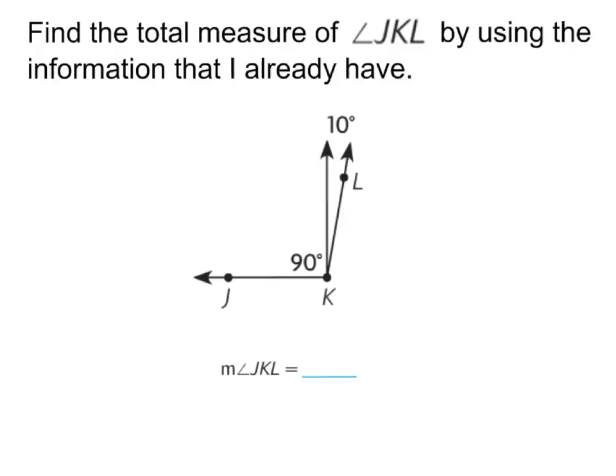Remember how our essential question is how we find the measure of an angle that's separated into parts. In this example, I am looking for the measure of angle JKL. The only clues that I have, if I did not own a protractor, would be the clues provided. First of all, I know that this is greater than 90 degrees because it's an obtuse angle. I know my answer needs to be greater than 90 degrees.